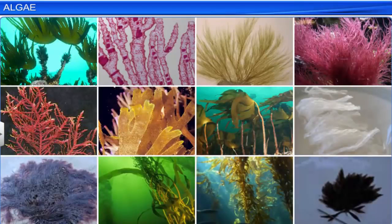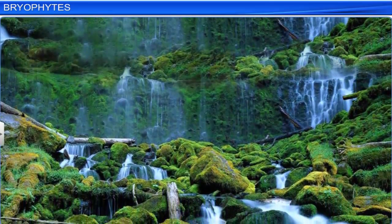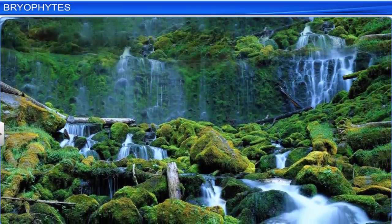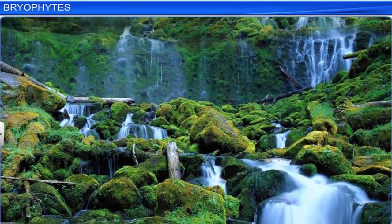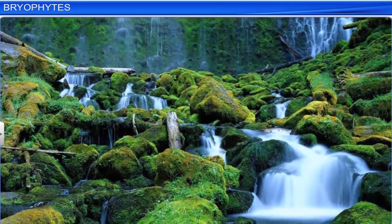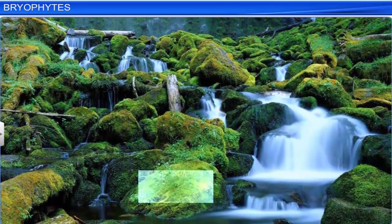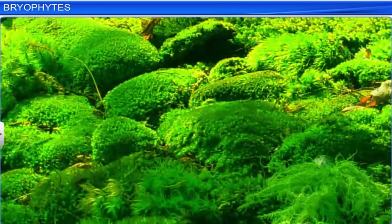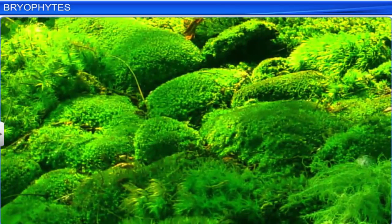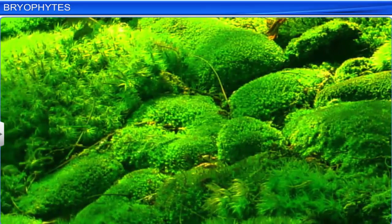Thus, we have seen that there are a variety of algae that thrive in the aquatic habitat. It is common to see a green cover growing over rocks, bricks, and walls after heavy showers. This green cover is nothing but moss, which is a type of bryophyte. Bryophytes are plants that usually grow in damp, humid, and shaded localities.